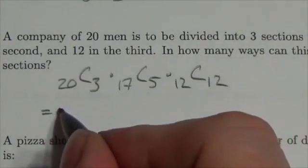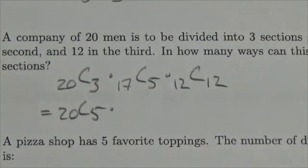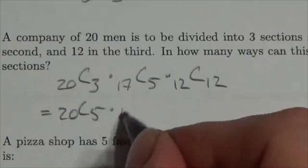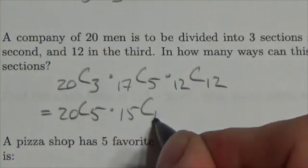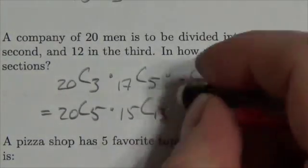Another way we could have done this: we could have done 20 choose 5. We could have filled in that second group first. That would leave us with 15 left over. Let's say we fill in the third group.